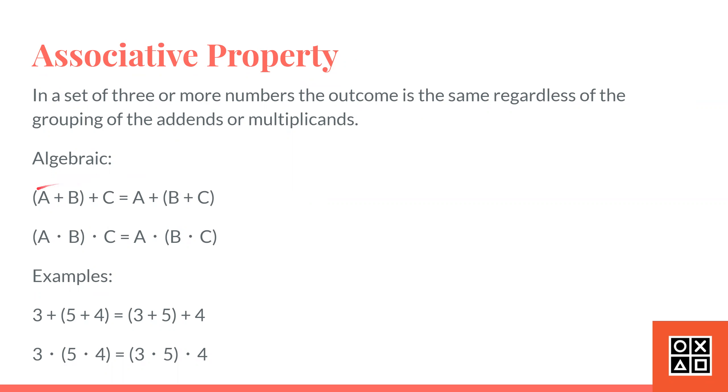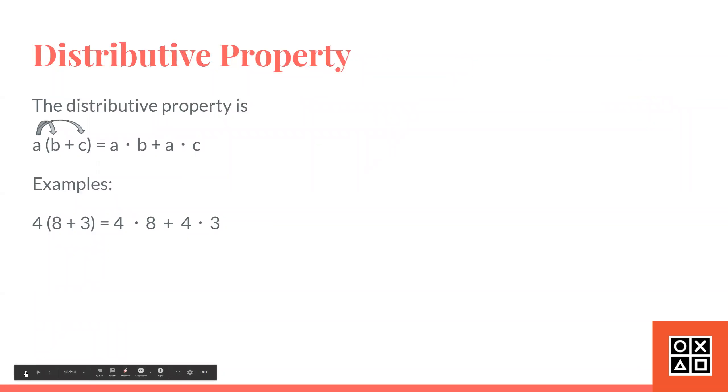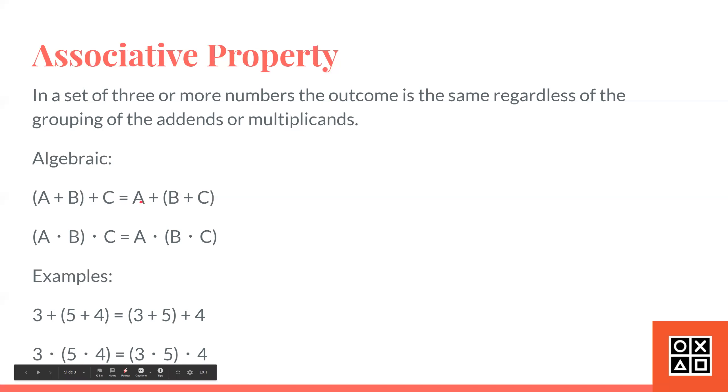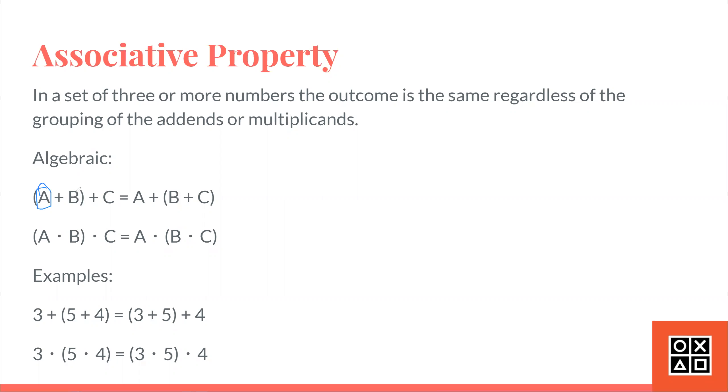Algebraically, this states that open parentheses, A plus B, close parentheses, plus C equals A plus open parentheses, B plus C, close parentheses. All this is doing is that it's bumping out the A and clumping together the B and C.